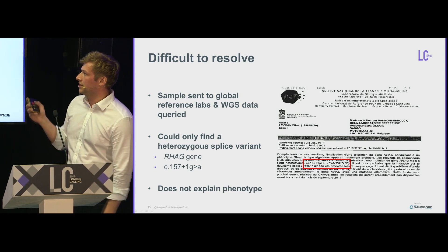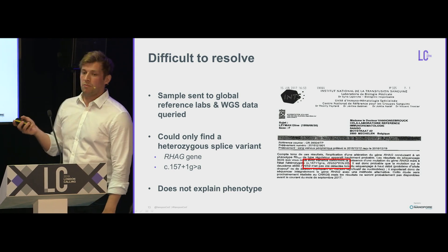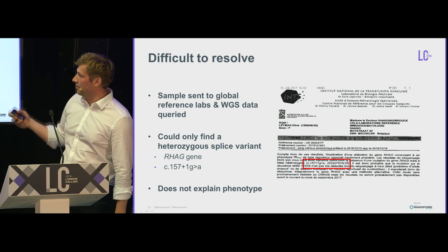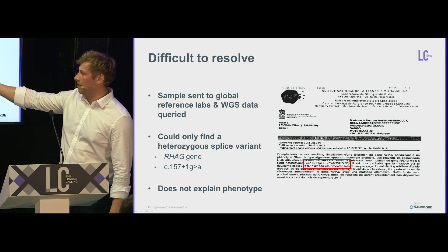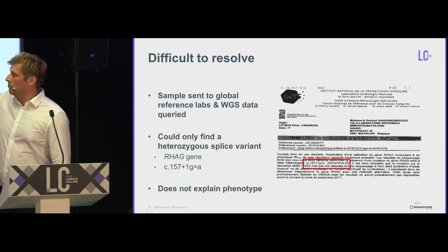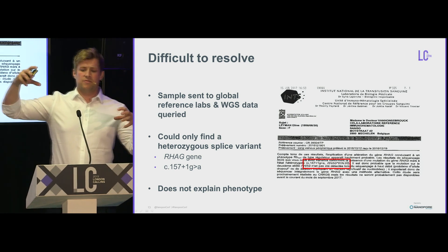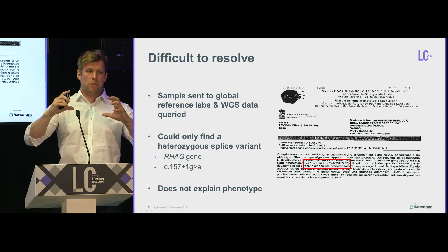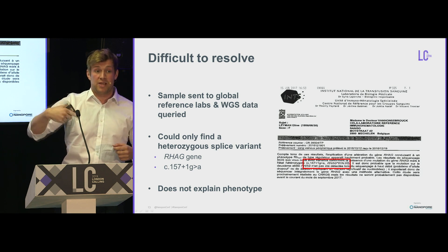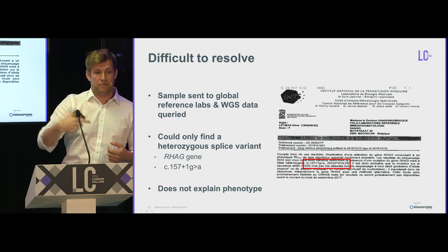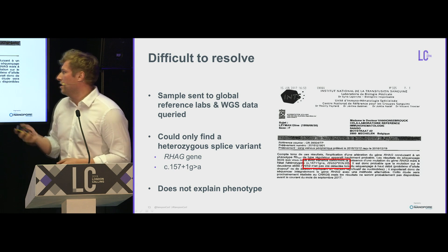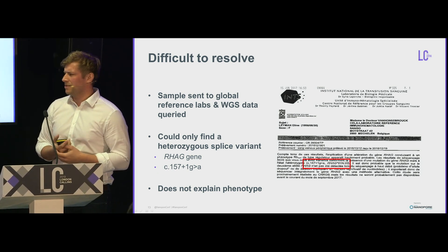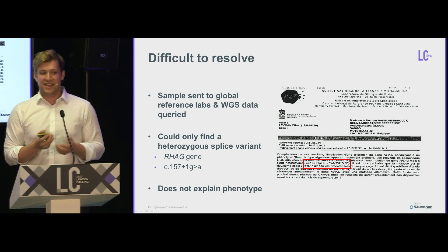It proved very difficult to resolve. The sample was sent to global blood group reference laboratories that do molecular typing. They detected a RHAG splice site variant — RHAG being the protein that pins the rhesus proteins into the cell membrane, so without RHAG you can't anchor your rhesus antigens. However, this variant was only detected heterozygously, so it doesn't fully explain her phenotype, as she still had one functioning copy of the gene.